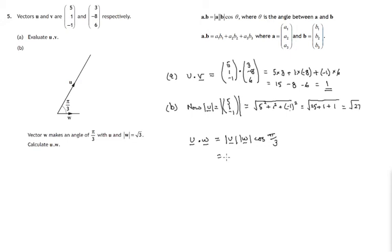So we know now, when we're working out this dot product, we can put in root 27 for the magnitude of u. Let's look at the magnitude of w. Well, we're told that's root 3. And the cosine of pi upon 3? Well, that's radians. Remember, pi radians is 180 degrees.